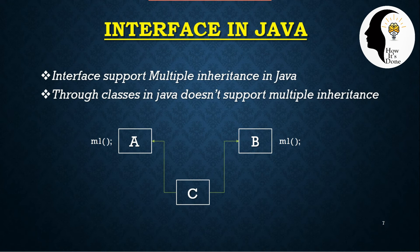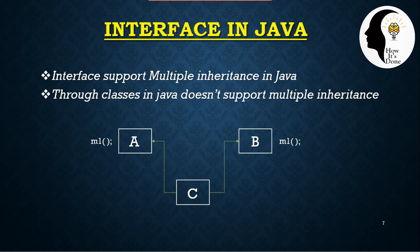A and B are the two parent classes, and C is the child class. When we implement C, we create an object and call the M1 function. However, if both A and B have an M1 function, ambiguity arises — the compiler cannot determine which M1 to call. In the absence of a clear M1 definition, it is not able to create an object.